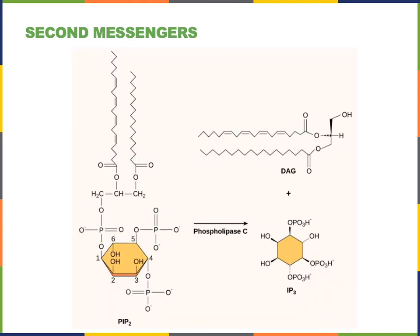One of the phospholipids that forms the plasma membrane, known as PIP2 or phosphatidylinositol diphosphate, can be converted to two second messenger molecules: DAG, which stands for diacylglycerol, and IP3, which stands for inositol triphosphate. The enzyme phospholipase C catalyzes the conversion of PIP2 into DAG and IP3.